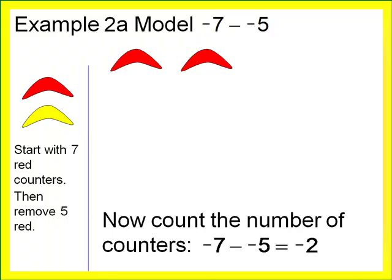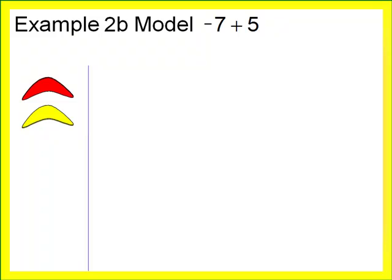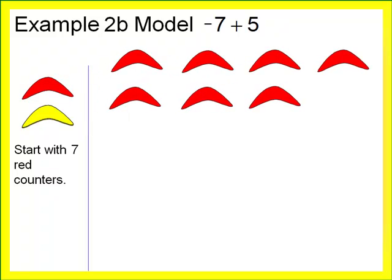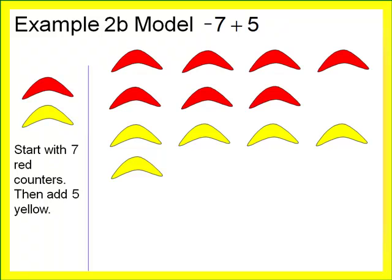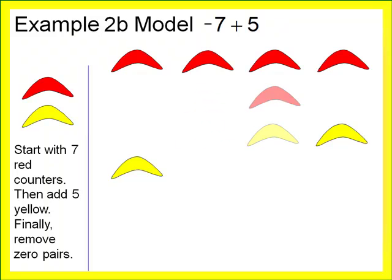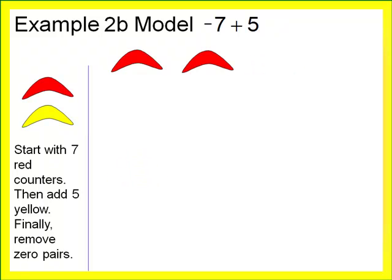For the second part of example two, we look at negative seven plus positive five. Start with seven red counters to represent negative seven. Addition means to put in, so we put in five yellow counters. Notice that there are zero pairs in the workspace — let's remove the zero pairs. Negative seven minus negative five and negative seven plus positive five give the same answer.